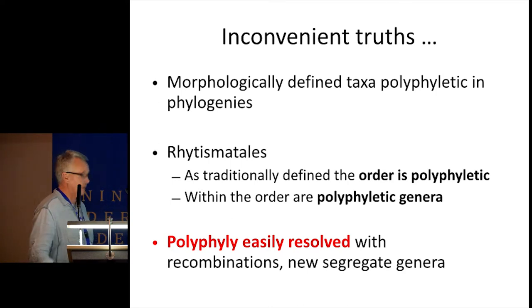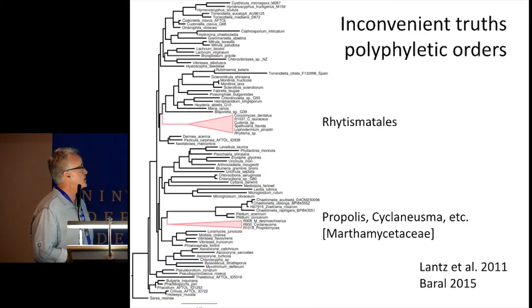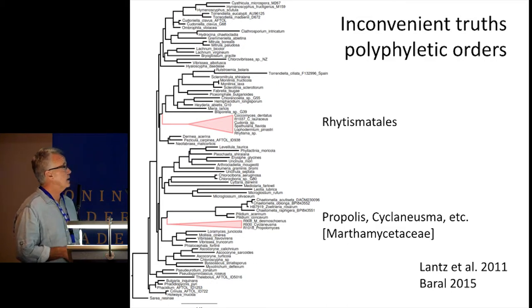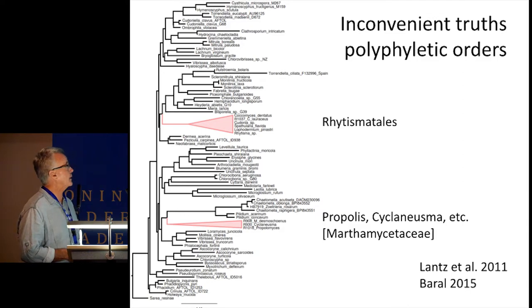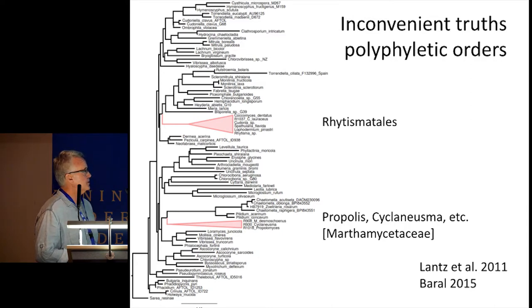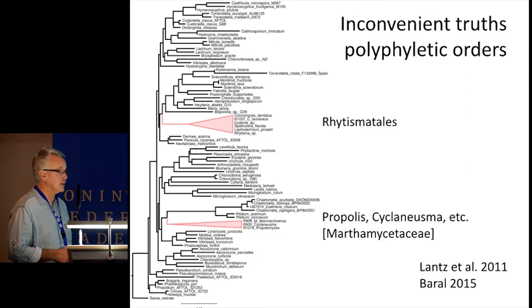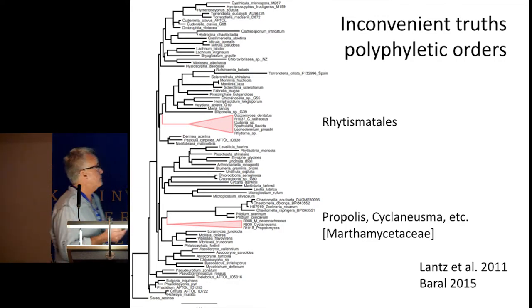The next inconvenient truth: morphologically defined taxa are polyphyletic in phylogenies. This is fairly easily resolved with new combinations and new segregate genera. Using a couple of examples from the Rhytismatales — as defined before a 2011 paper by Lance et al., the Rhytismatales was polyphyletic. The core Rhytismatales includes genera like Rhytisma and Lophodermium. But a group of genera traditionally placed in the Rhytismatales — Propolis, Cyclaneusma, Marthamyces — were phylogenetically quite distinct. Baral recently proposed the family Marthamycetaceae to accommodate these genera, resolving that polyphyly with a new higher taxon.